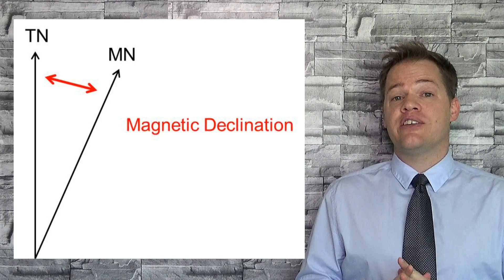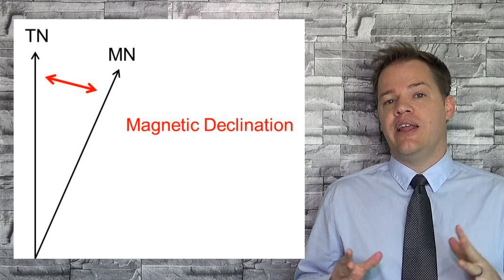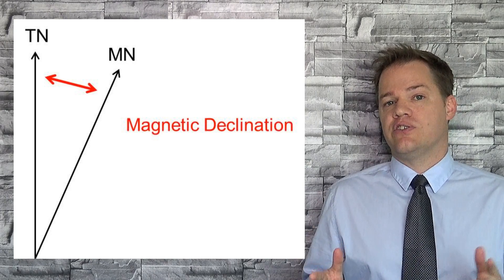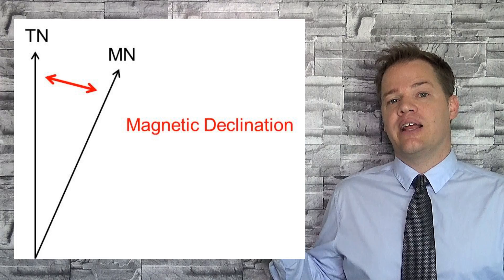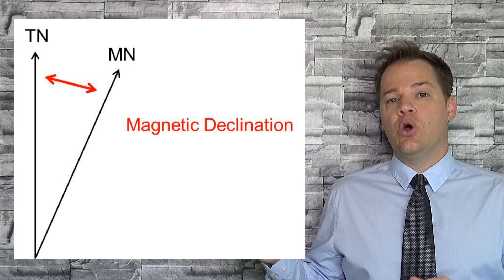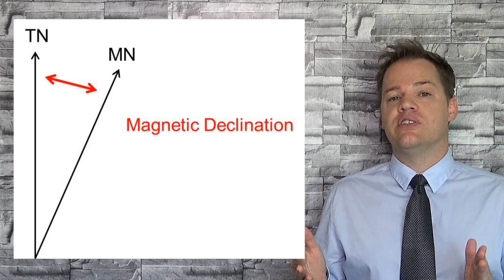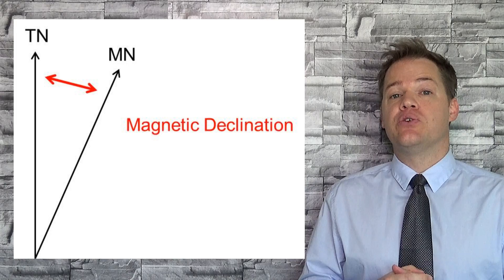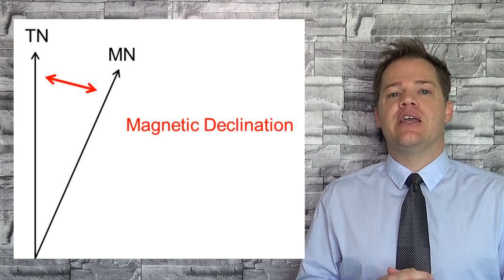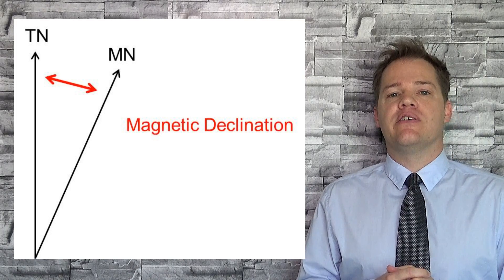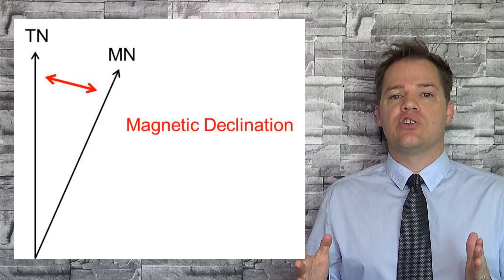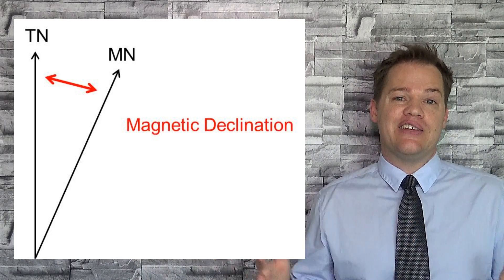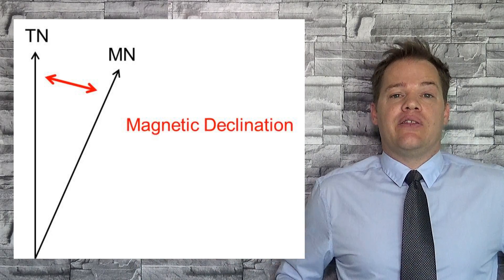Now as I've mentioned earlier, the magnetic field of the earth changes, and so the magnetic declination will also change over time. Something else to remember is that the magnetic declination also differs from place to place.